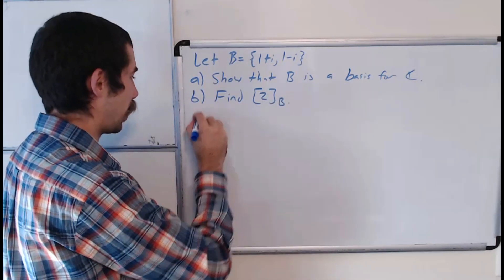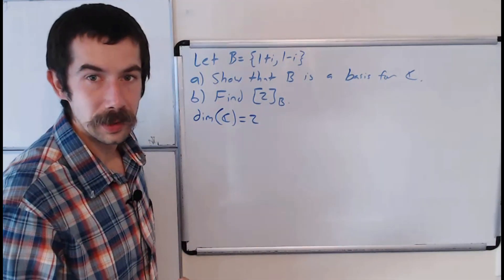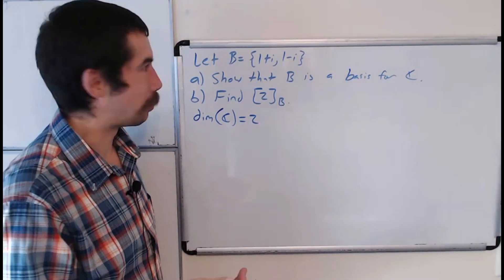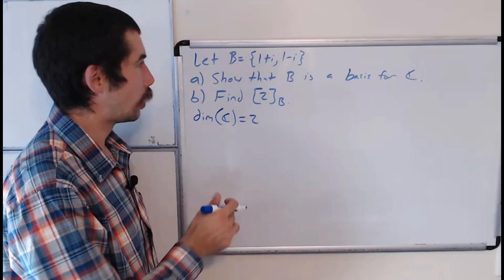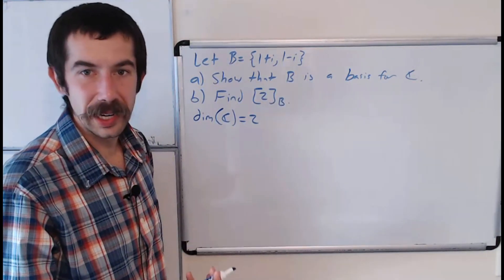We know that the dimension of ℂ is equal to 2. We showed that in class and it's really not hard to show. So we just have to show that these two complex numbers are linearly independent.